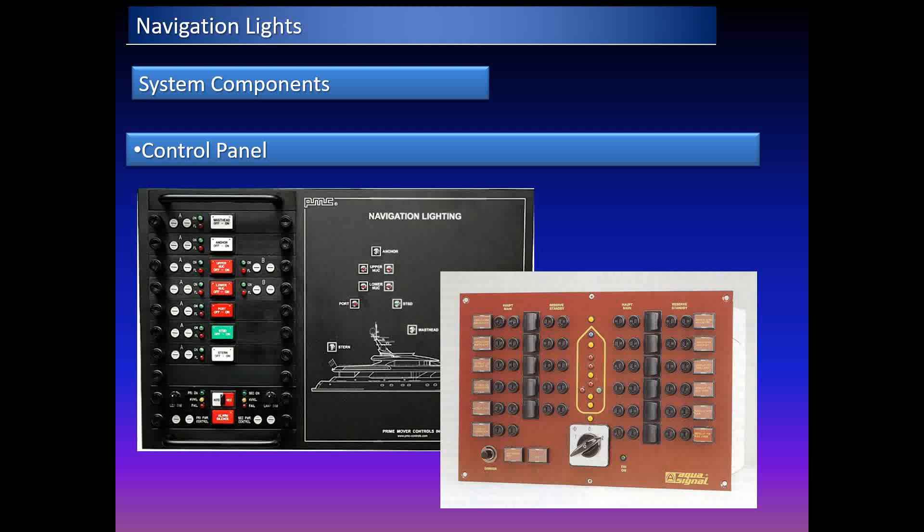You also have the control panel, which we call the Christmas tree lights panel. This control panel is located inside the wheelhouse, on the ship's bridge. From it you can switch lights on and off, find out if one of the lights is not working, and hear a buzzer if a light fails.